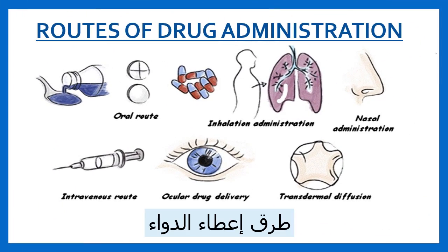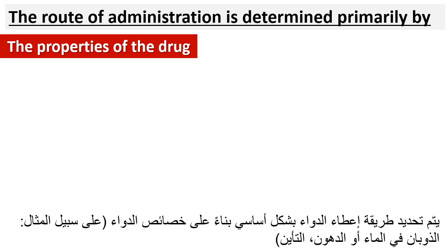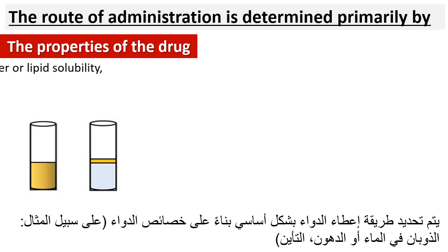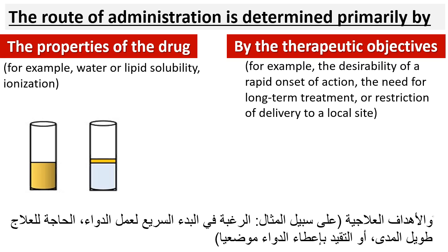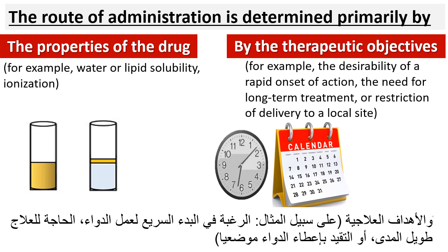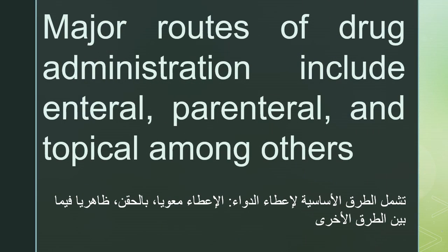The route of administration is determined primarily by the properties of the drug — for example, water or lipid solubility and ionization — and by the therapeutic objectives, such as the desirability of a rapid onset of action, the need for long-term treatment, or restriction of delivery to a local site. Major routes of drug administration include enteral, parenteral, and topical, among others.